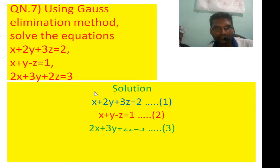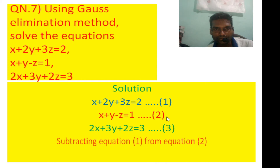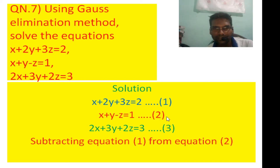The equation is 2x plus 3y plus 2z equals 3. Using the first equation, we eliminate the variable x from the second and third equations. Subtracting equation 1 from equation 2 gives us y plus 4z equals 1.